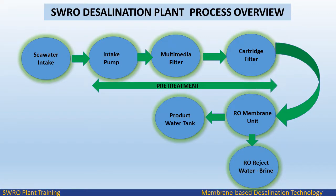Pretreatment: The purpose of the first step, pretreatment, is to remove the suspended solids from the saline source water and to prevent some of the naturally occurring soluble solids from turning into solid form and precipitating on the reverse osmosis (RO) membranes.